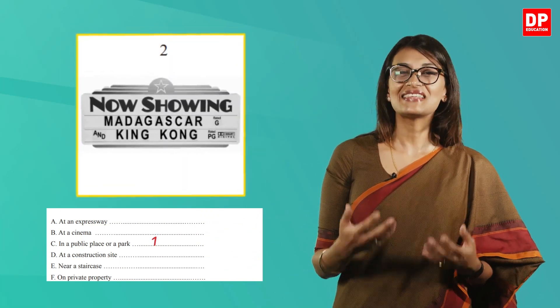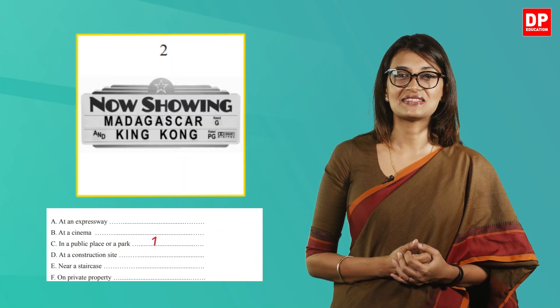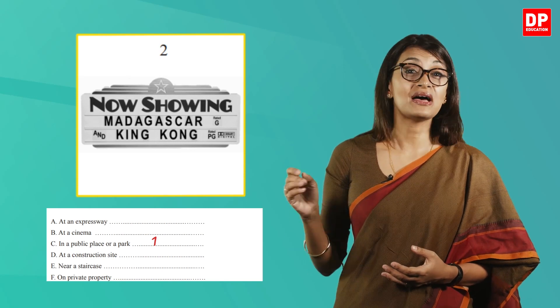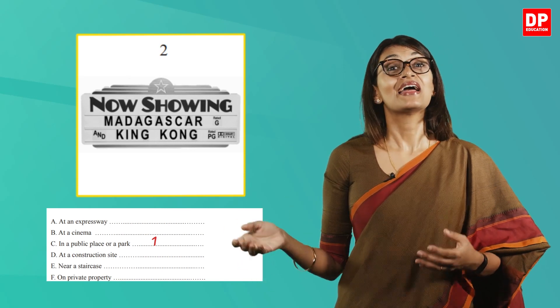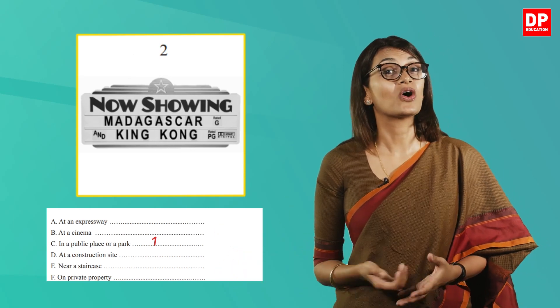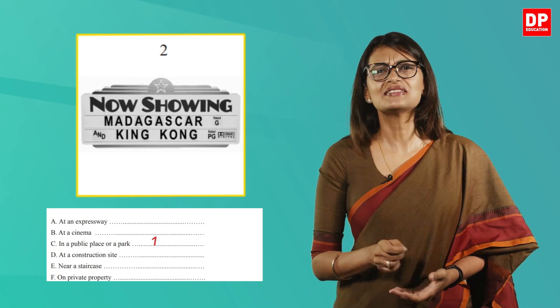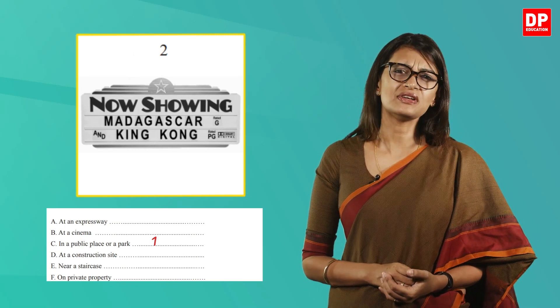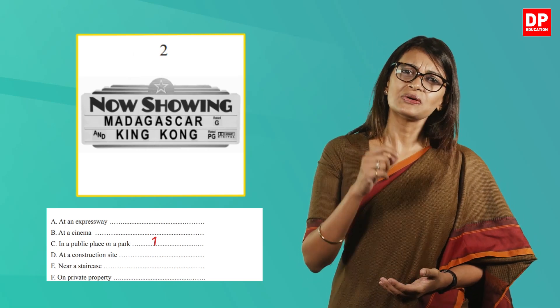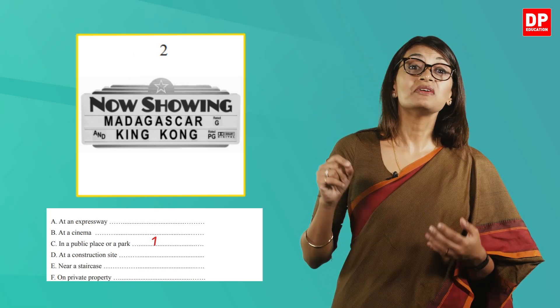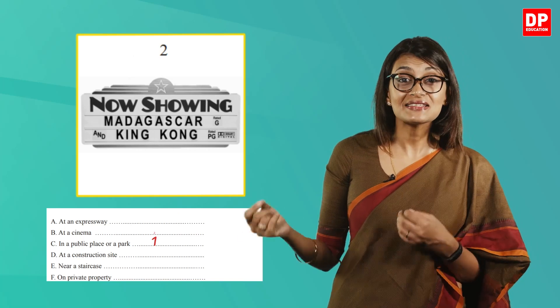The second sign states 'Now showing: Madagascar and King Kong.' Clearly these are names of movies, so it is a sign that will be found at the cinema — answer B.